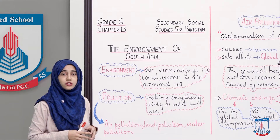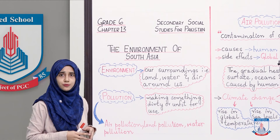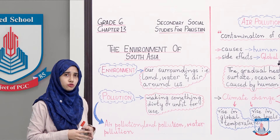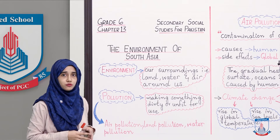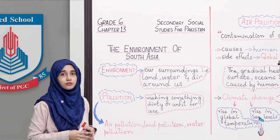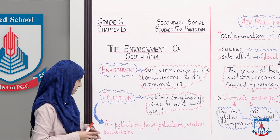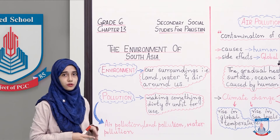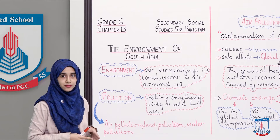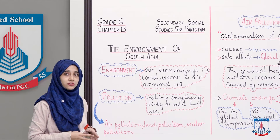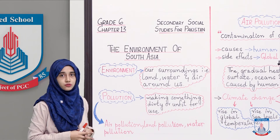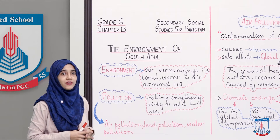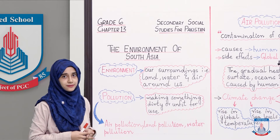Now there are different forms of pollution: air pollution, soil pollution, land pollution. In your book some forms of pollution are discussed, so we are going to talk about them — air pollution, land pollution, water pollution, waste products pollution, and industrial pollution. These are the forms of pollution we are going to discuss today.